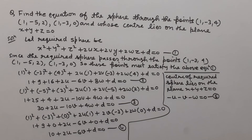We know that the center of the required sphere is (-u, -v, -w), and it is given that the center lies on the plane x + y + z = 0. So the center satisfies the equation of the plane, giving -u - v - w = 0 as equation 5. Now we solve equations 2, 3, 4, and 5 to find the values of u, v, w, and d.